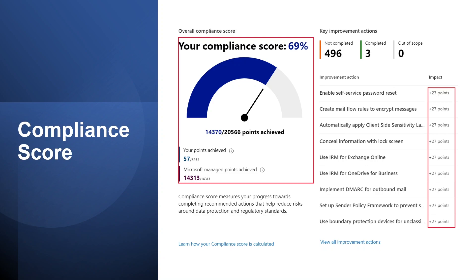Compliance measures progress in completing recommended improvement actions within controls. The score can help an organization understand its current compliance posture and also helps prioritize actions based on their potential to reduce risk.